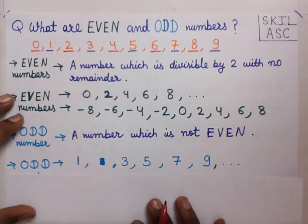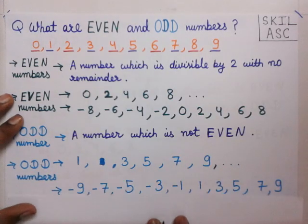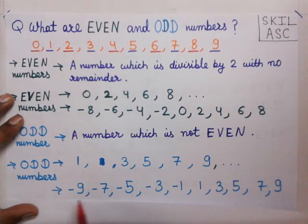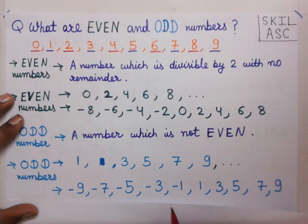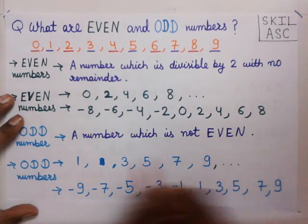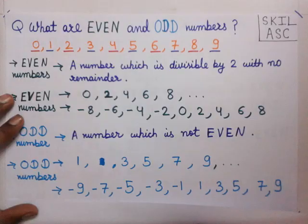If we include negative numbers, the list of odd numbers becomes: -9, -7, -5, -3, -1, 1, 3, 5, 7, 9. These are all odd numbers.